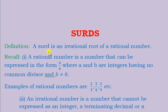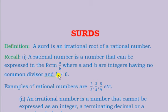Surds. We shall begin by defining: a surd is an irrational root of a rational number. But if we're talking about a rational number, what do we mean? A rational number is a number that can be expressed in the form a over b, where a and b are integers having no common divisor, and b should not be equal to zero. The reason b should not equal zero is because if it becomes zero, then a over b becomes undefined mathematically.